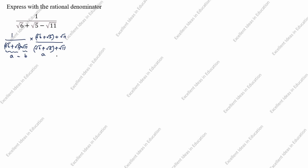This is of the form a plus b. What is a plus b times a minus b? It equals a square minus b square. Next: root 6 plus root 5 plus root 11 divided by a square, which is root 6 plus root 5 the whole square, minus root 11 the whole square.